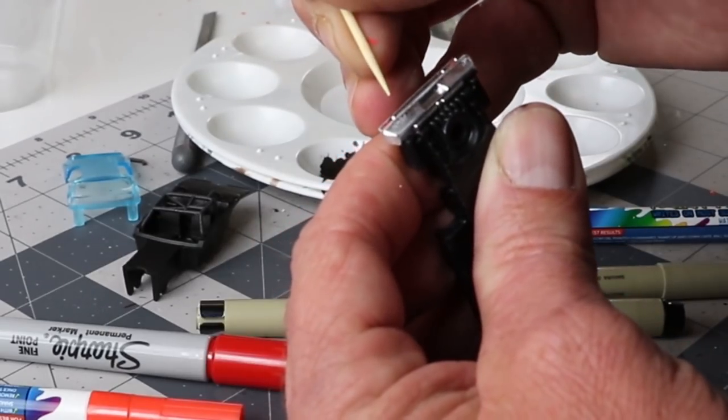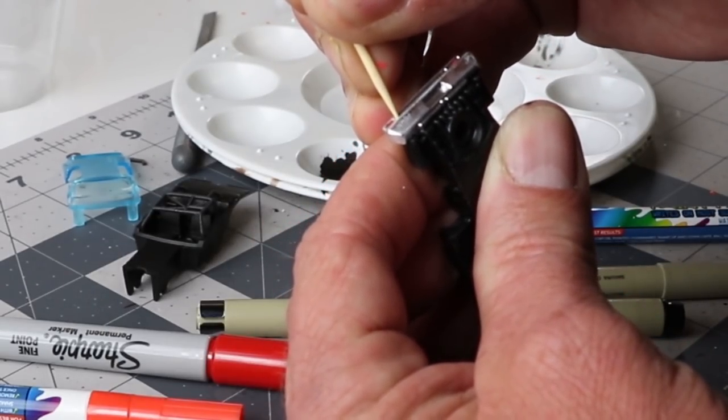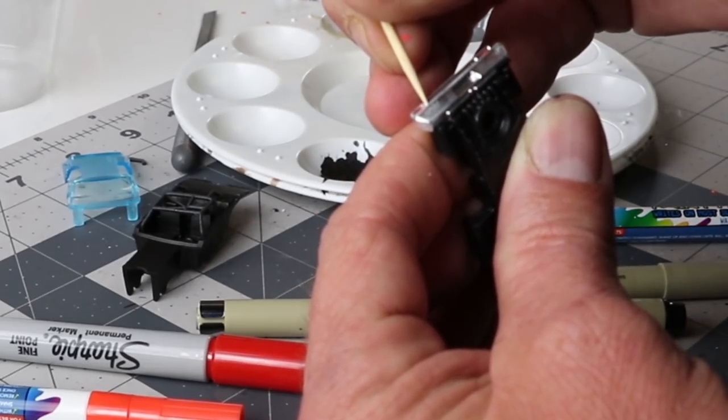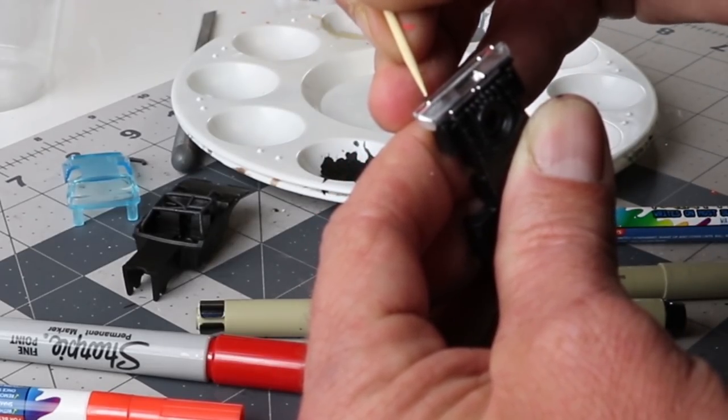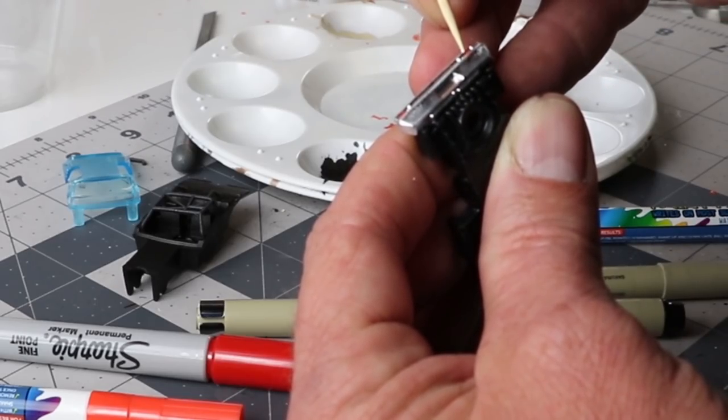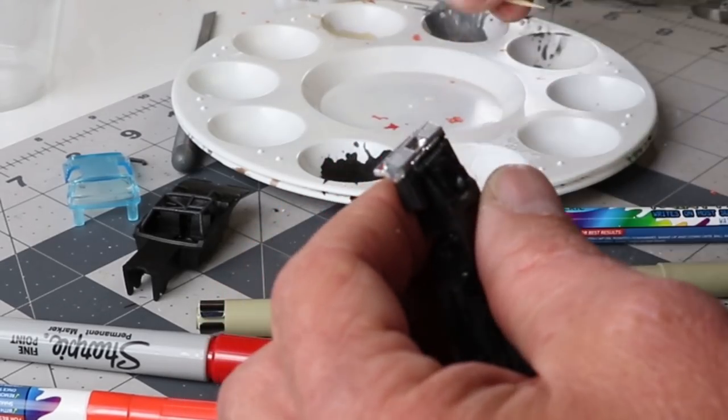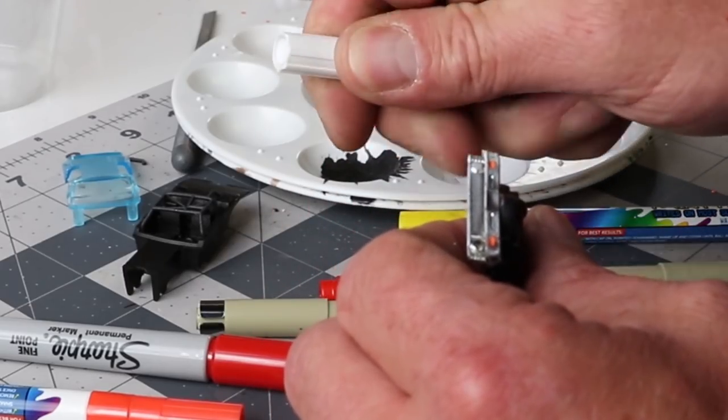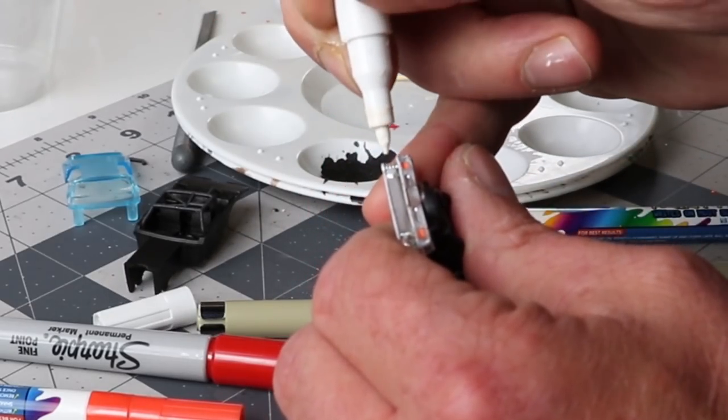I have the worst hands when it comes to small details. I shake like crazy, probably from the 8,000 cups of coffee I drink a day. So, I'm doing the rear, reverse lights, brake lights, and then I'll detail the black. I got my, I'm doing the headlights here.